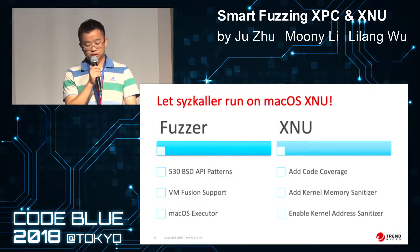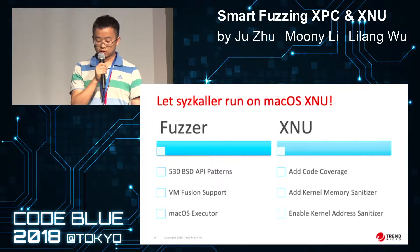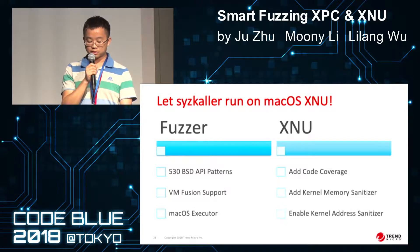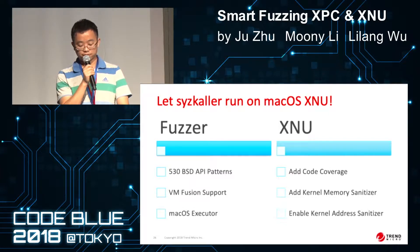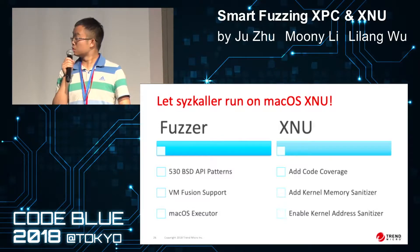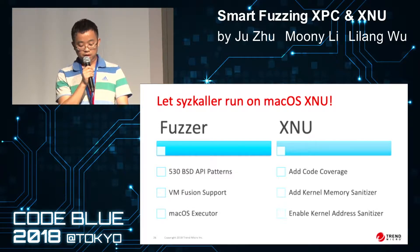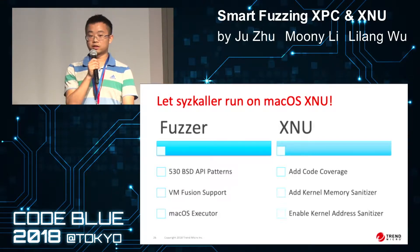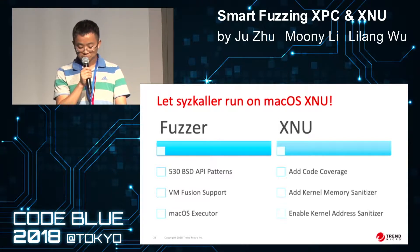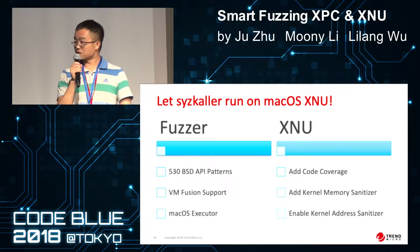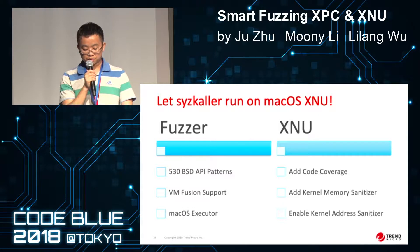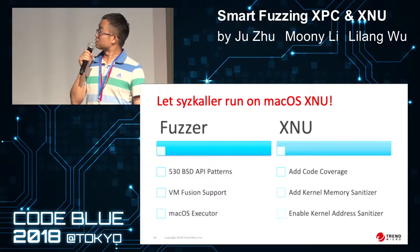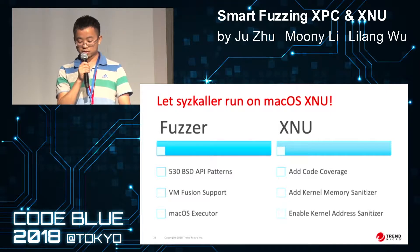In order to make Syzcaller run on macOS, we need to do two parts of work. The first part is: we need to add the corpus and API patterns — I developed more than 500 API patterns for this tool. I also add support for VMware Fusion, and I developed the executor for this tool. For XNU, since it doesn't support code coverage, I developed the code coverage module in XNU, added a kernel memory sanitizer which doesn't exist in XNU, and also enabled the kernel address sanitizer.